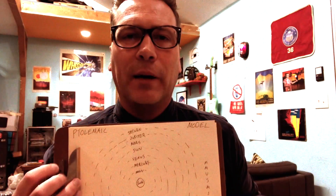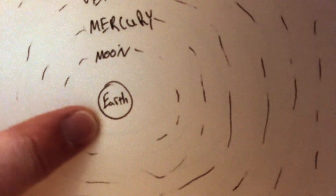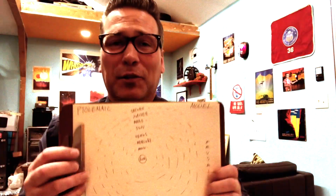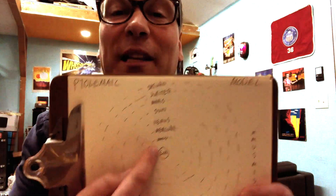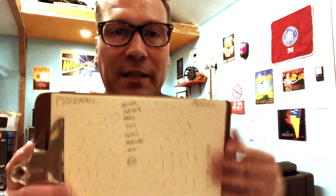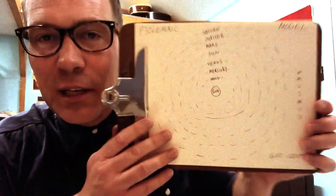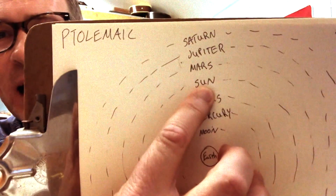We now call it the Ptolemaic model. This is my artistic rendering of it. Look what's right at the center — not the solar system, because they didn't even call it a solar system, because Earth was at the center. This was the universe to them, everything that existed. It began with Earth, and everything moved outward. We've got Earth, then the next object orbiting Earth would have been the Moon, then Mercury, Venus, and then way out here, you got the Sun. Then Mars, then Jupiter, then Saturn.